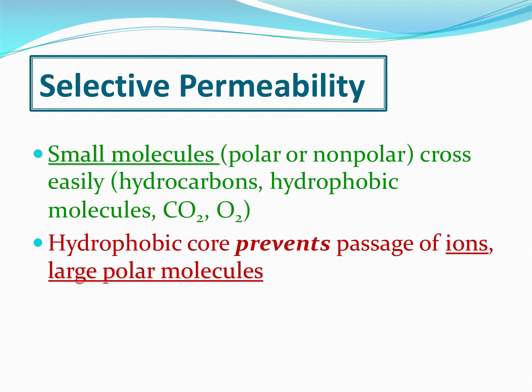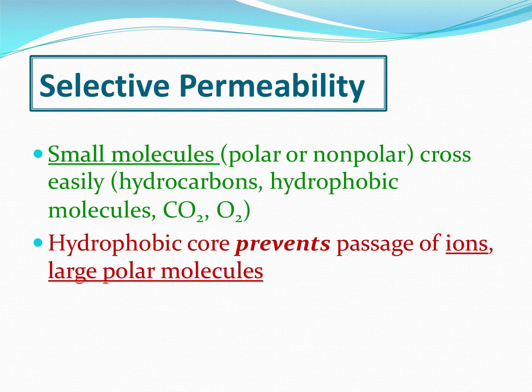Selective permeability really has to do with polar, nonpolar, hydrophobic, and hydrophilic interactions. The only things that can go straight across the membrane are very small and nonpolar molecules. For our purposes, only CO2 (carbon dioxide gas) and O2 (oxygen gas) can go straight across the membrane. Both molecules are extremely small — they can slip through the very small cracks in the phospholipid bilayer — and they're nonpolar, so that nonpolar interior doesn't interfere with them.